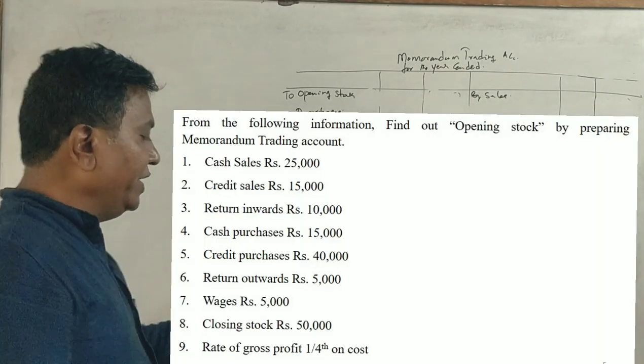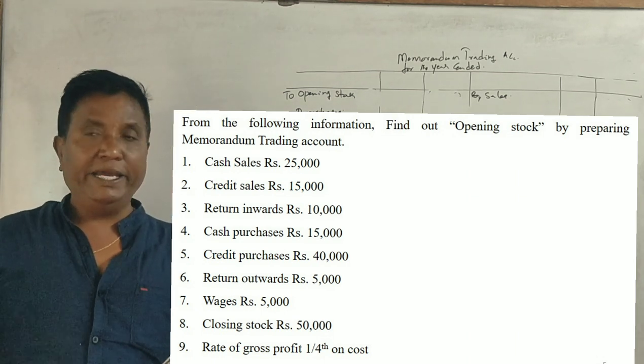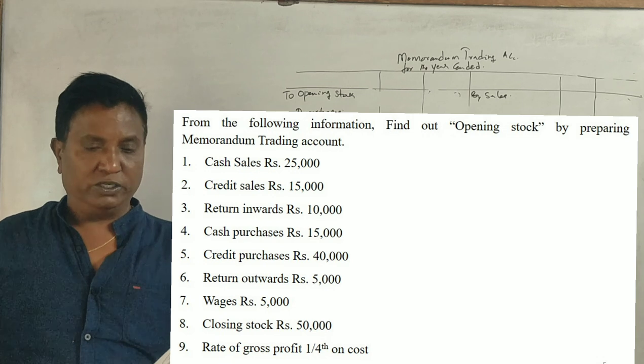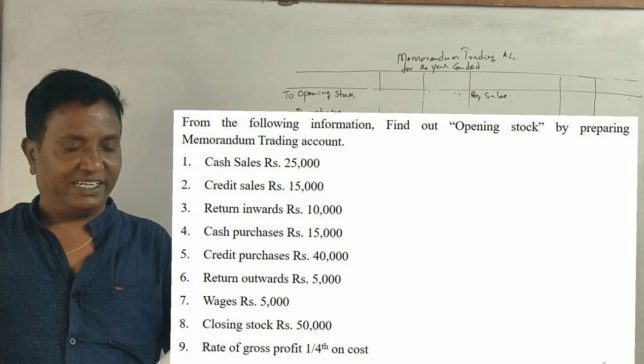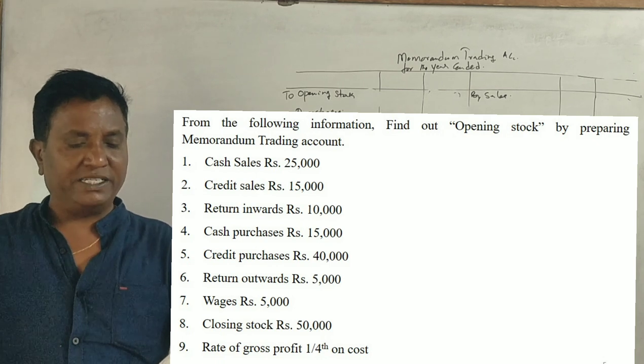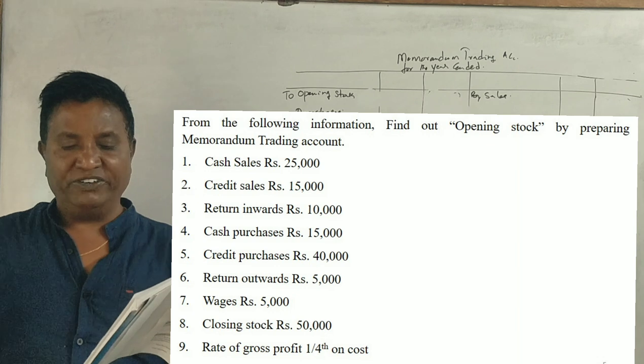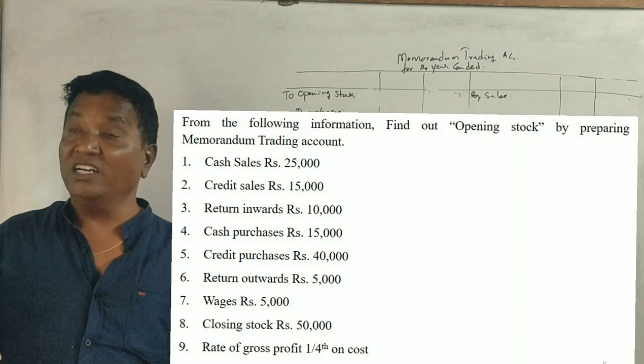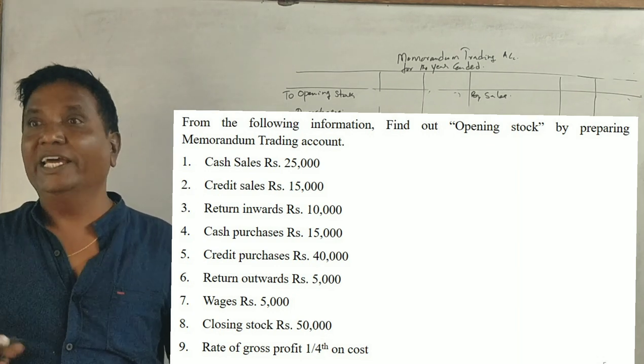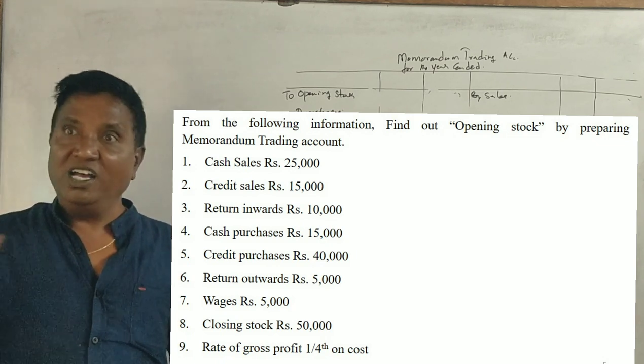From the following information, find out opening stock by preparing memorandum trading account. The given items include: cash sales, credit sales, returns inwards, cash purchases, credit purchases, returns outwards, wages, closing stock, and rate of gross profit one-fourth on cost.